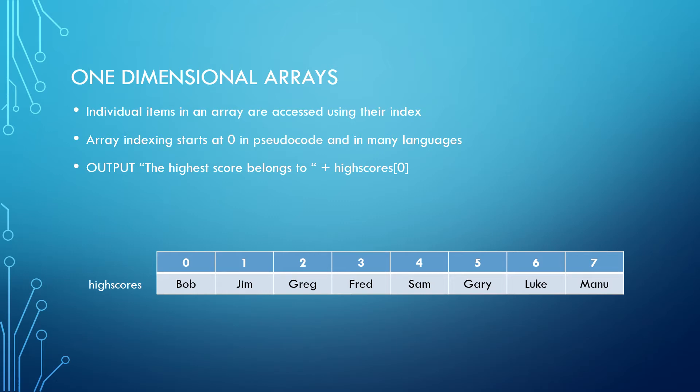This same method of accessing values can be used to assign new values to the items in the array. As you can see below, high scores with position seven means that we would like to change position seven from Manu to Dan or in the second example to whatever the user inputs.